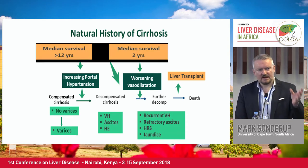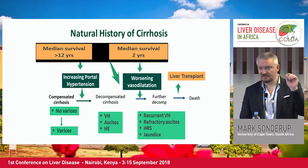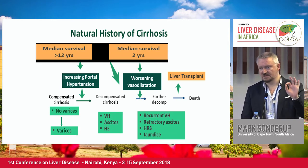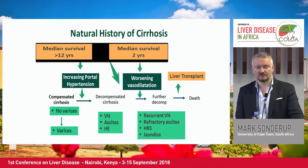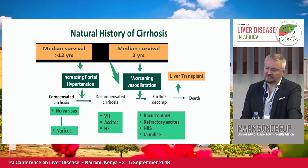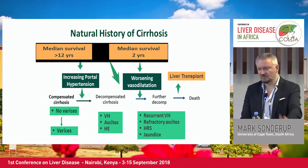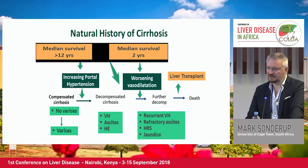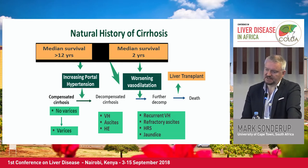Just as a reminder: if you have compensated cirrhosis, provided you deal with the cause, prognosis is actually very good. A typical Child's Pugh cirrhotic has very good median survival. But once you hit the decompensating part of the curve, things are not as good.